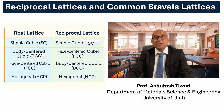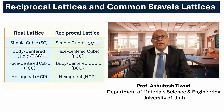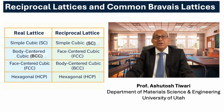Now let us look at how reciprocal lattices relate for familiar crystal systems. For a simple cubic lattice, the reciprocal is also simple cubic because all axes remain orthogonal and equal. However, for a body-centered cubic lattice, the reciprocal lattice turns out to be face-centered cubic. And vice versa, the reciprocal of FCC is BCC. This inversion reflects how additional lattice points in real space correspond to additional periodicities in reciprocal space.